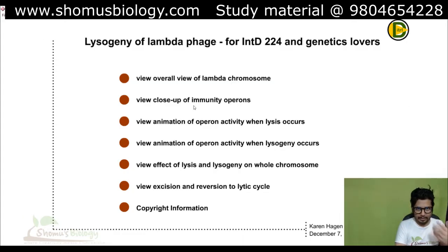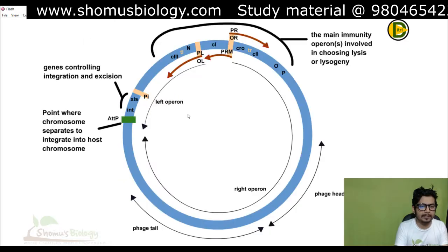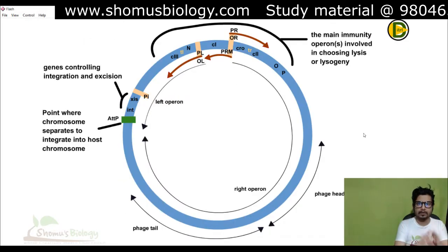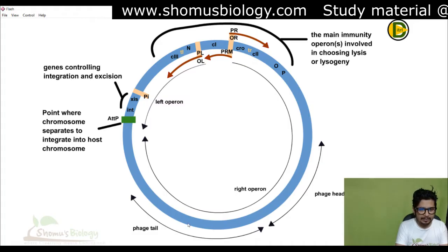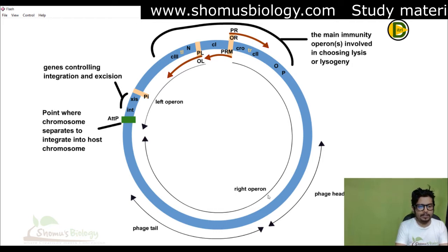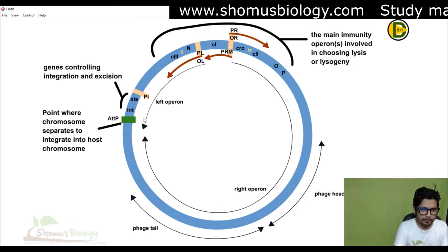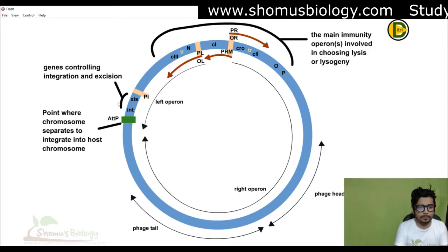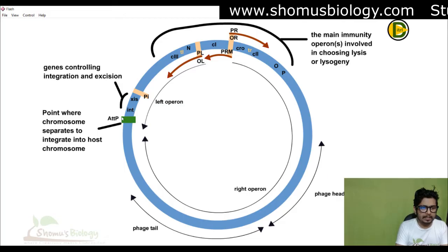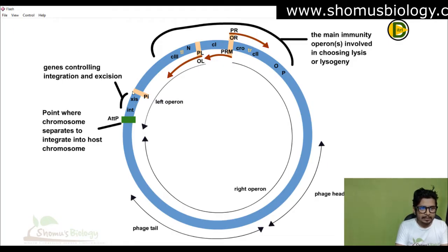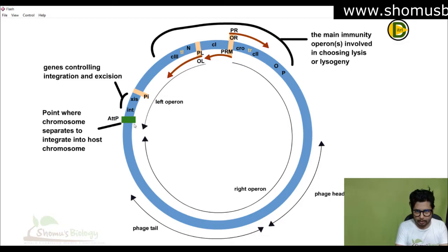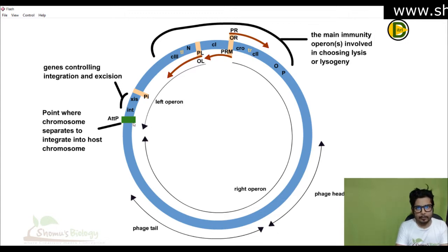Before going into the details of the lytic/lysogenic switch, you need to understand the structure of the phage circular DNA. This is the phage DNA. You can see the phage tail at the bottom and the phage head. The bottom portion contains the phage tail and head genes, and the upper portion has two separate sites: one is the integration site (int) and another is the excision site (xis), which are genes controlling integration and excision respectively. attP is the attachment site — this is where the viral DNA gets cleaved and incorporated with the bacterial DNA.